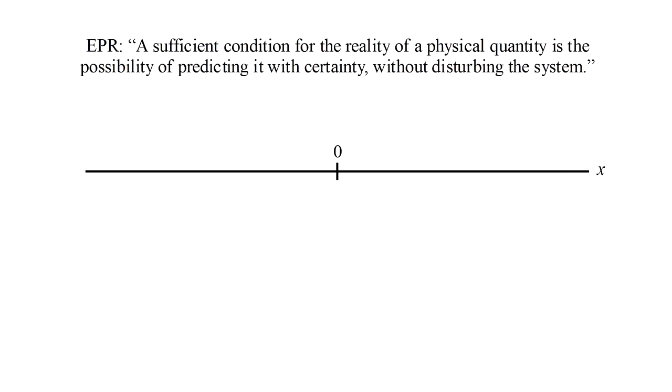Suppose at the origin of the x-axis, some event emits two identical particles. One travels to the right with momentum p1 and position x1, and the other to the left with momentum p2 and position x2. If the total momentum of the system was initially zero, then to conserve zero momentum, p2 would have to be the opposite of p1, so that their sum is zero.